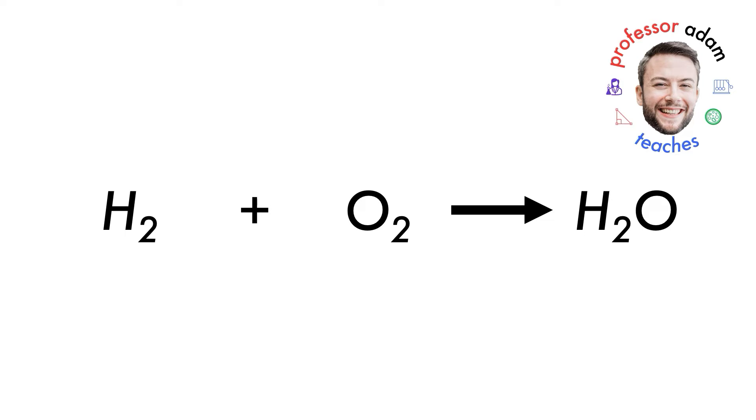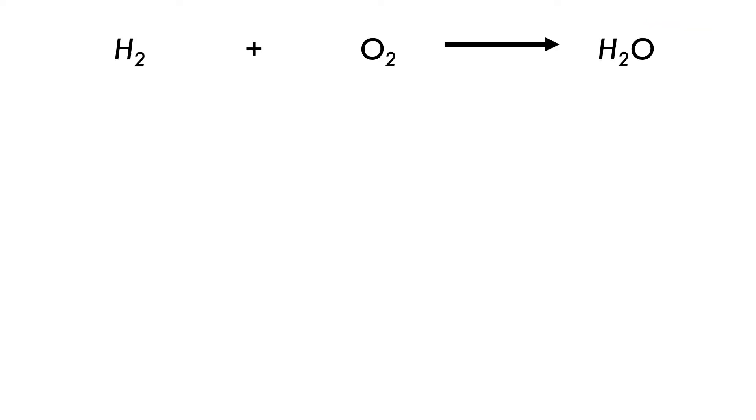Let's try to balance the reaction of hydrogen with oxygen to produce water. We want to balance the reaction of hydrogen and oxygen to form water. First of all, we count up how many of each atom and element we have on the product side and on the reactant side, starting with hydrogen and oxygen.